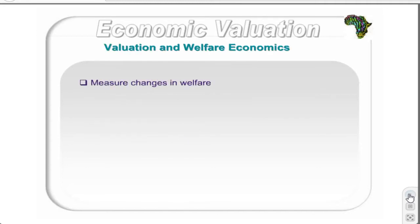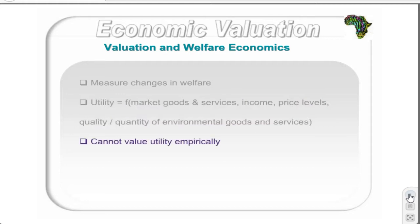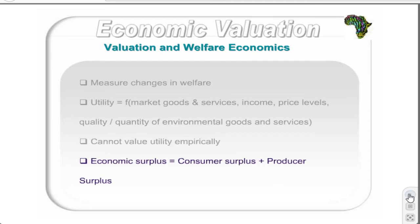Valuation attempts to measure changes in welfare or utility, typically using a utility function. This function is explained with variables such as market goods and services, income and price levels, as well as the quality or quantity of environmental goods and services. However, utility cannot be valued empirically, so the concept of economic surplus is used instead. This is a combination of consumer and producer surpluses.